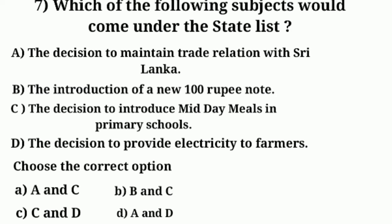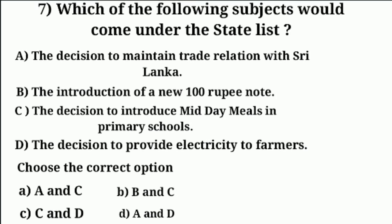Which of the following subjects would come under the state list? A — the decision to maintain trade relations with Sri Lanka, B — the introduction of a new 100 rupee note, C — the decision to introduce midday meals in primary schools, and D — the decision to provide electricity to farmers. We have the state list, concurrent list, and union list — three lists. The answer is C and D: the decision to introduce midday meals in primary schools and the decision to provide electricity to farmers. A and B are not in the state list.